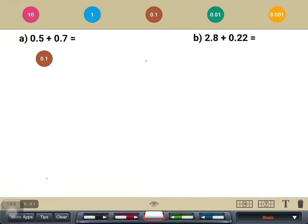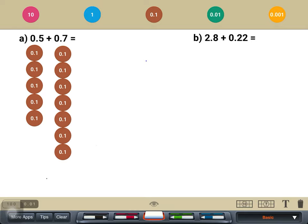Let us visualize it first. 5 tenths: 1, 2, 3, 4, 5, plus 7 tenths: 1, 2, 3, 4, 5, 6, 7, 8, 9, 10, 11, 12, giving you an answer of 12 tenths.